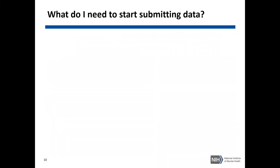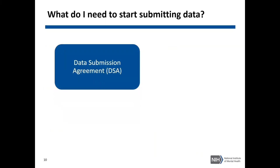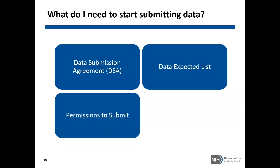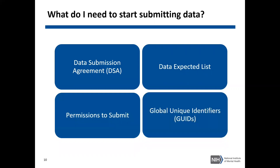Before you can actually start submitting your data, there are four items you need to complete and have: the NDA data submission agreement or the DSA, the data expected list, permissions to submit, and global unique identifiers or GUIDs.